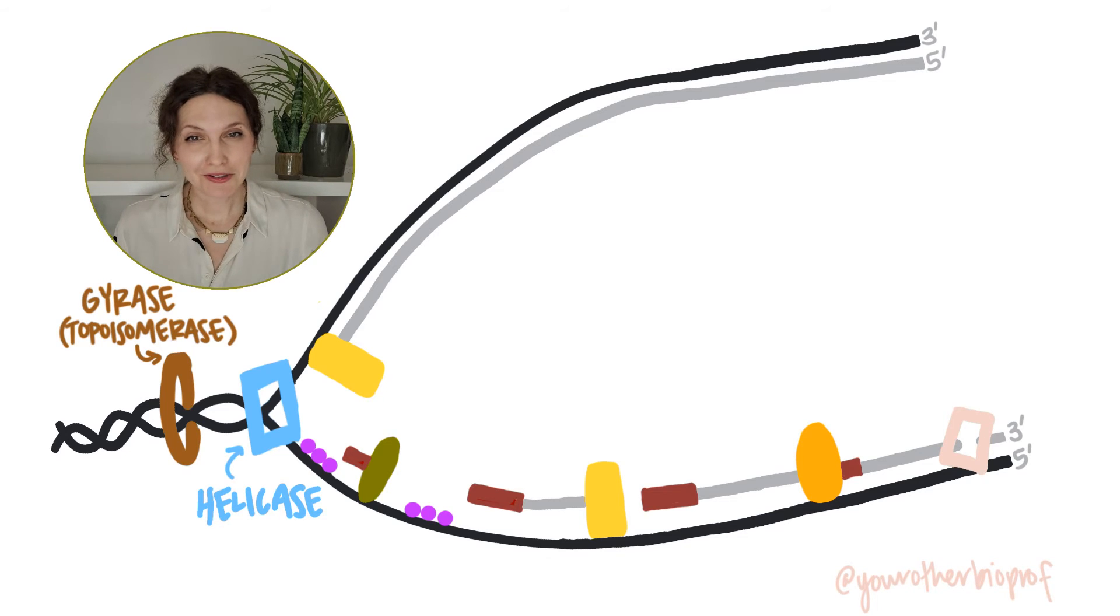Now DNA does not love being single-stranded. It's gonna want to kind of go back, get those complementary bases back together. That's not really helpful when we're trying to read it as a template. And so there are proteins called single-strand binding proteins, or SSBs, that are going to keep those DNA strands from coming back together. You're gonna find these in places where the DNA is still single-stranded.